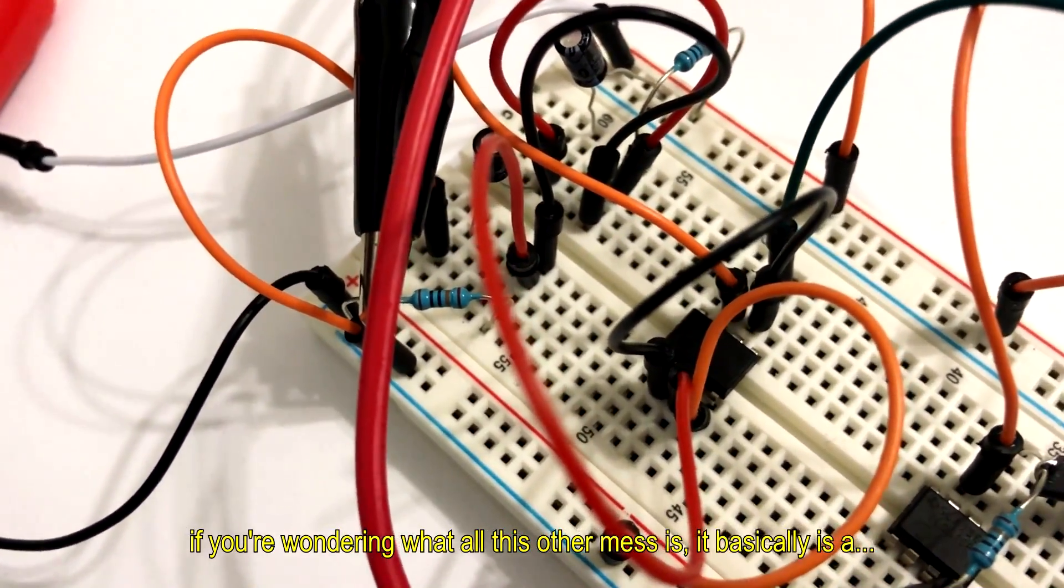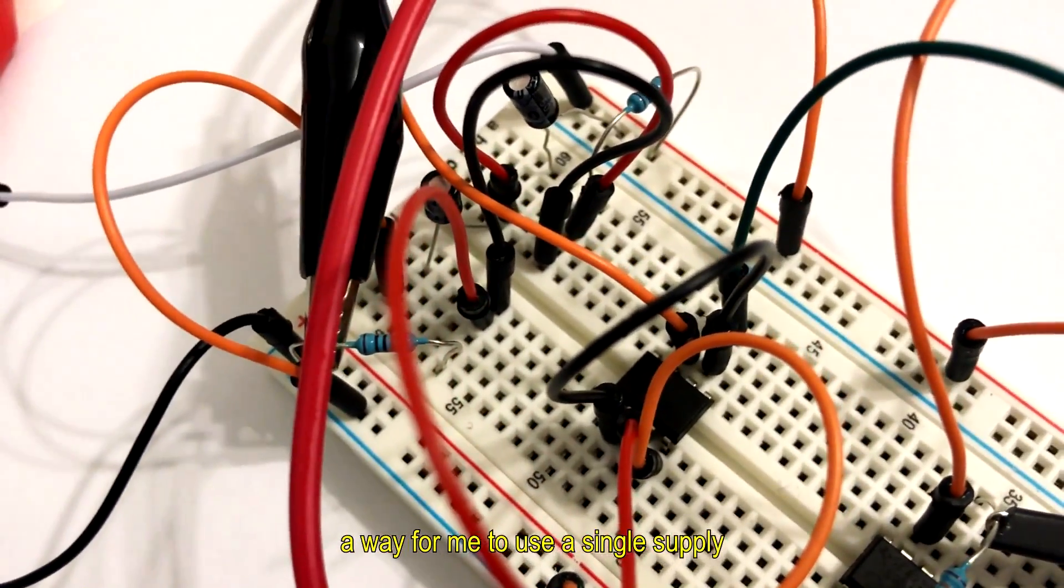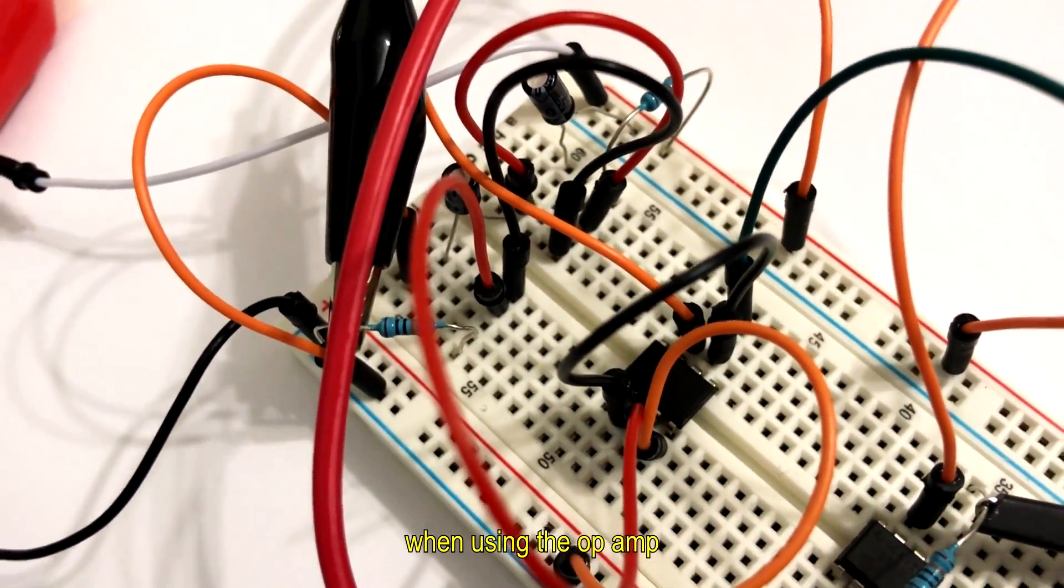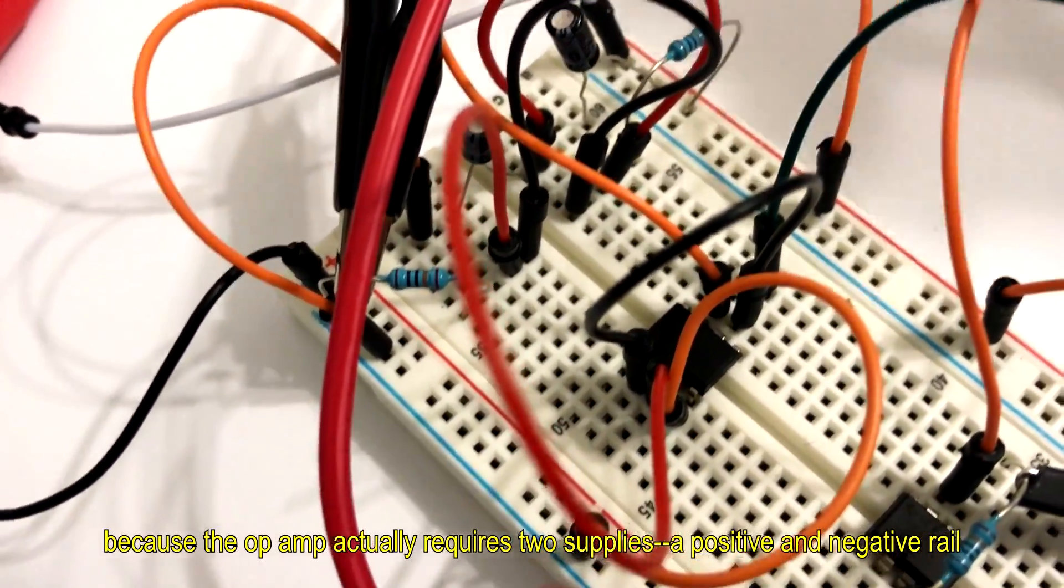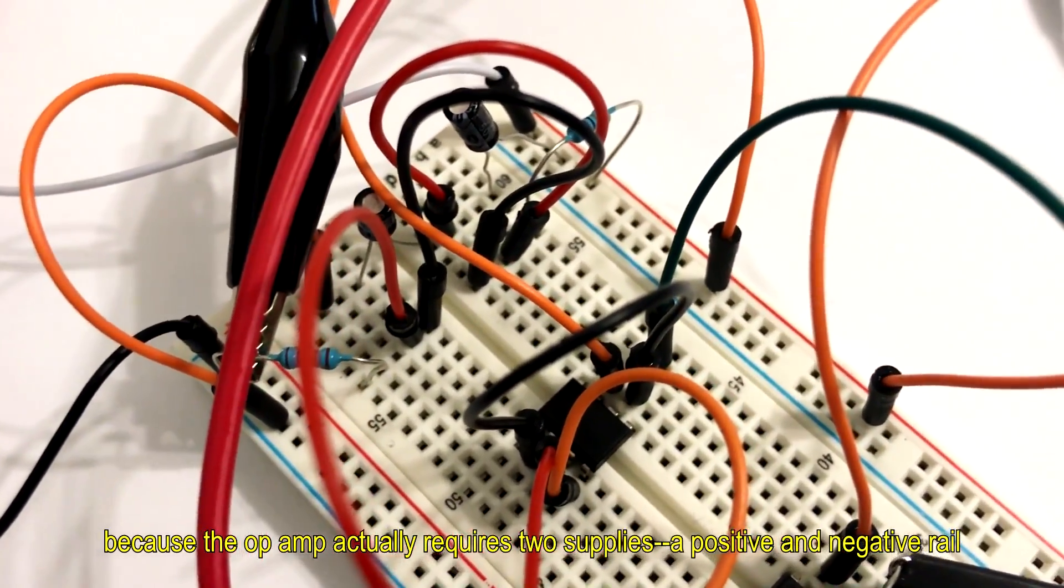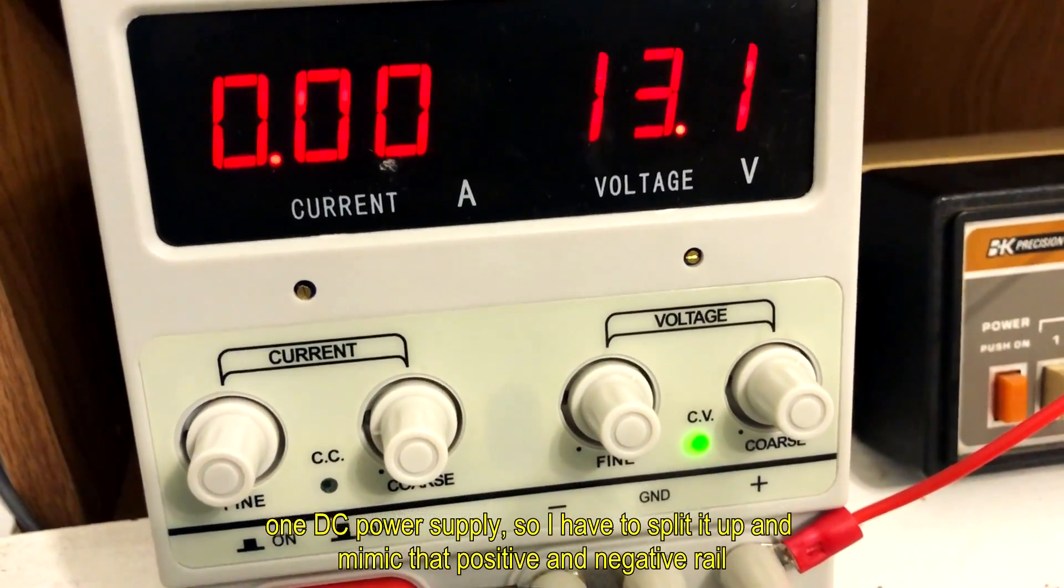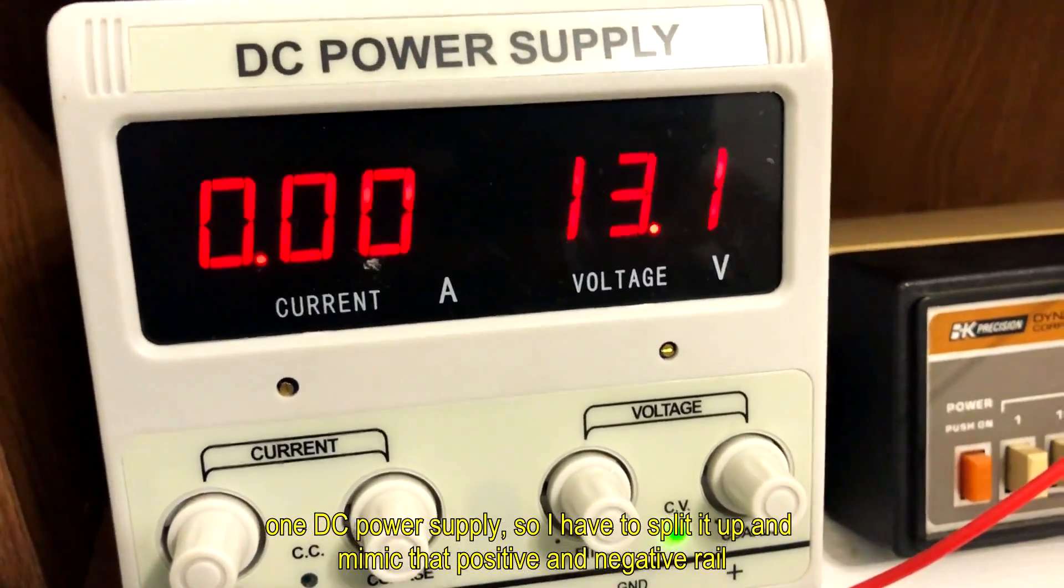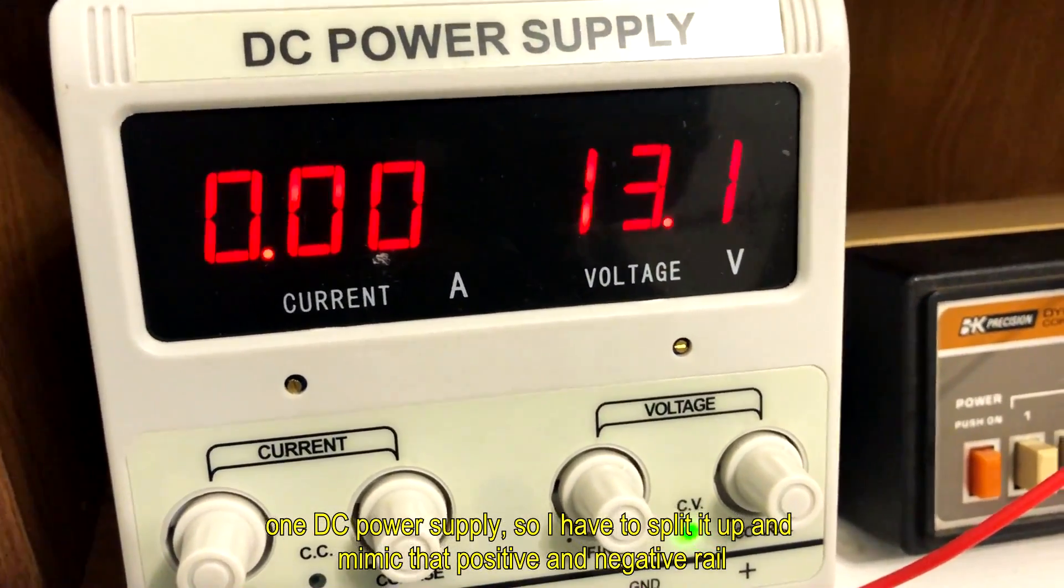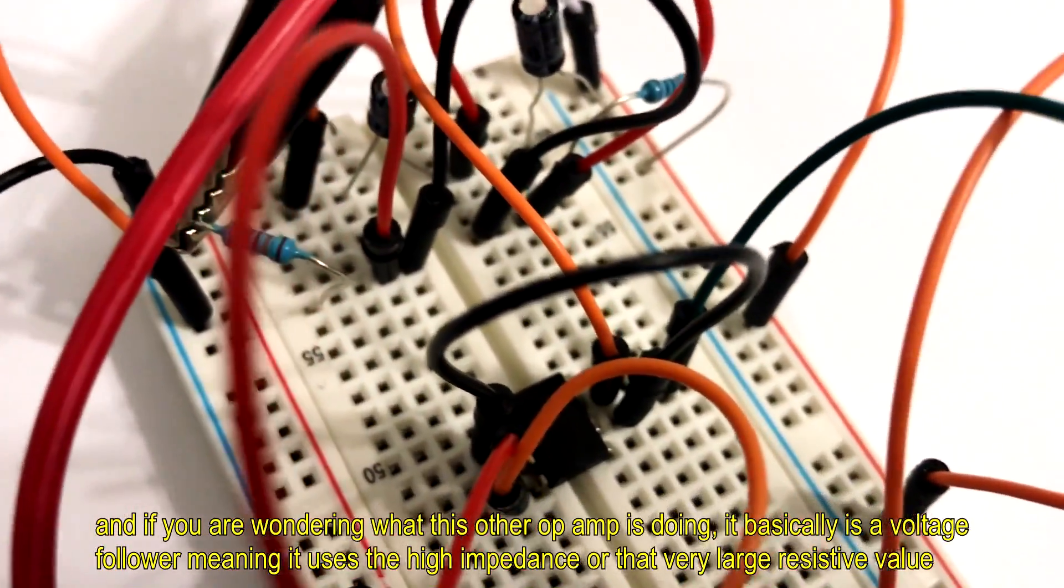If you're wondering what all this other mess is, it basically is a way for me to use a single supply when using the op-amp. Because the op-amp actually requires two supplies, a positive and negative rail. So all I have is one DC power supply so I have to split it up and mimic that positive and negative rail.